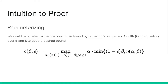Now that we have derived the loose bound of 1/40 of the optimal revenue, we can parameterize the previous proof by replacing half the optimal value with α times the optimal value, and the 1/4-quantile with β. Optimizing over α and β gives the desired bound of 0.108 of the optimal value.